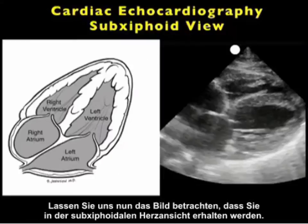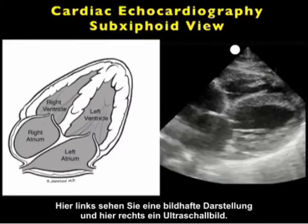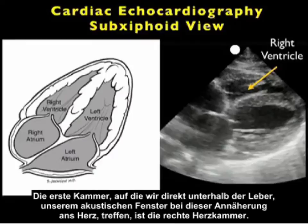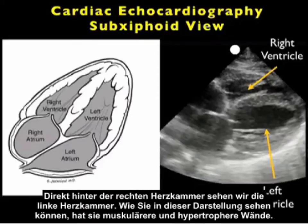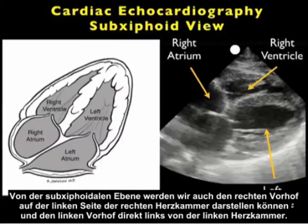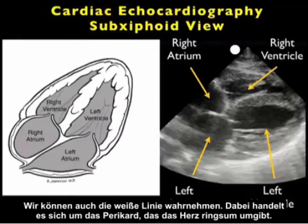Let's take a look at the image you'll obtain from the subxiphoid view of the heart — here's a pictorial to the left and an ultrasound image to the right. The first chamber we'll encounter, directly below the liver — which is our acoustic window onto the heart — will be the right ventricle. Immediately posterior to the right ventricle, we'll be seeing the left ventricle; notice that it has more muscular and hypertrophic walls. From the subxiphoid plane, we'll also be able to image the right atrium to the left of the right ventricle, and the left atrium just to the left of the left ventricle. We can also appreciate the white line that is the pericardium circumferentially surrounding the heart.